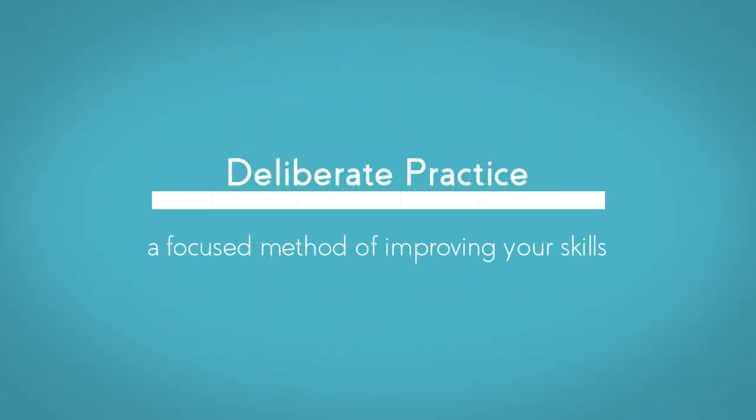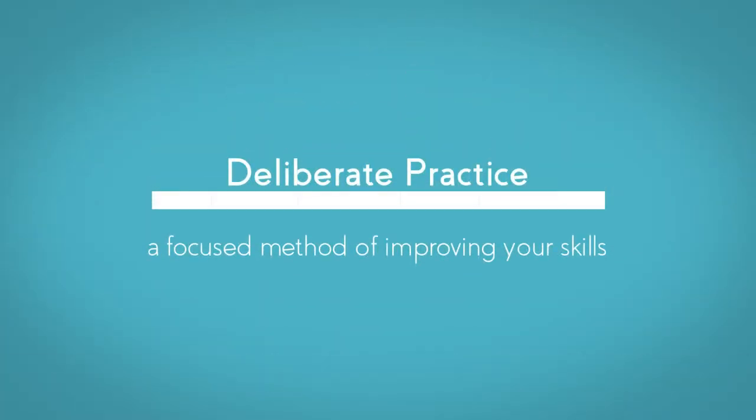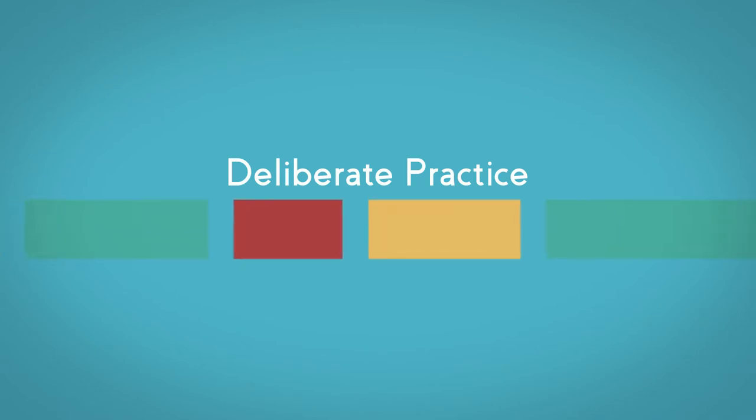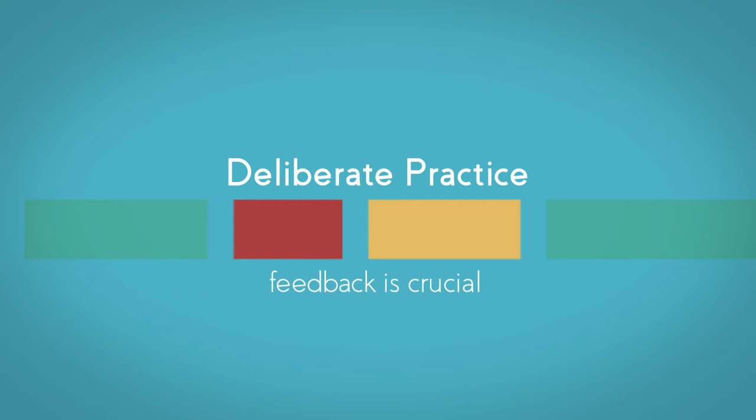What we need is deliberate practice. Deliberate practice is a focused method of improving your skills. It involves breaking a task into smaller parts, then identifying weaknesses and focusing on improving those areas. Along the way, feedback is crucial to make sure we're always on the right track.